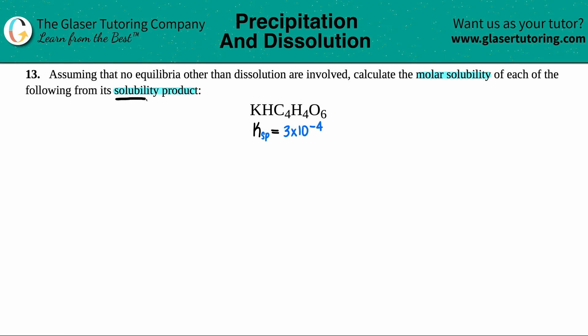So we have to find the molar solubility of KHC4H4O6 from its solubility product. And remember, a solubility product is just a Ksp. So I went in the back of the textbook to find out what the Ksp of KHC4H4O6 is. But what's a Ksp without a balanced equation? It's nothing. So we got to write the balanced equation.